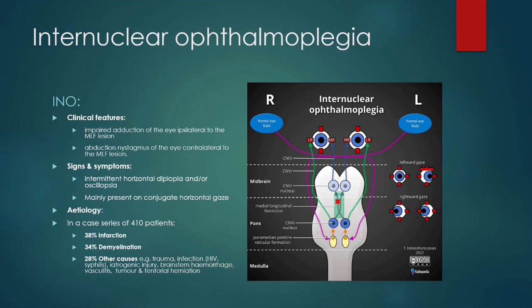In terms of causes, in a case series of about 410 patients, 38% were caused by infarction, 34% by demyelination, and 28% by other causes, including trauma, infection such as HIV and syphilis, iatrogenic injury, brainstem hemorrhage, vasculitis, tumour, and tentorial herniation.